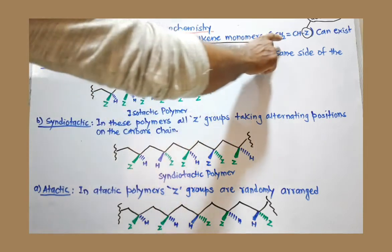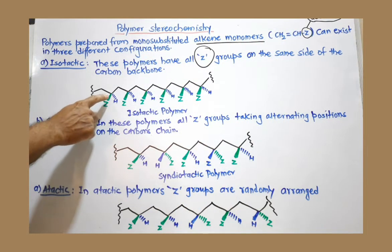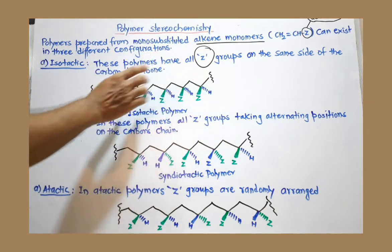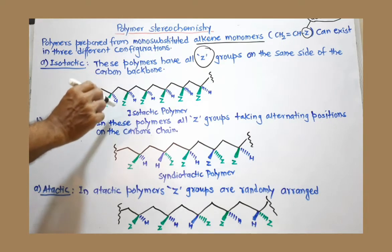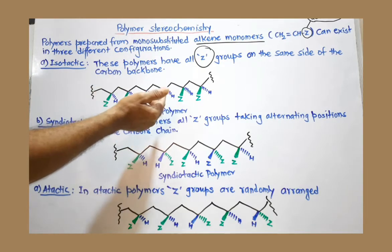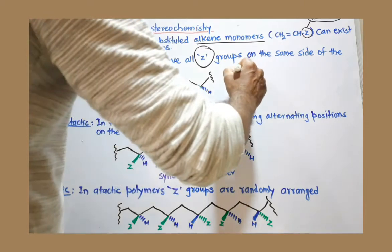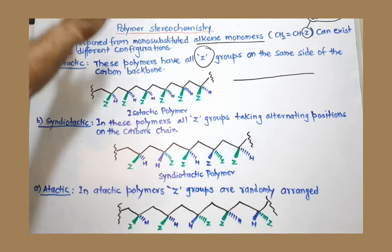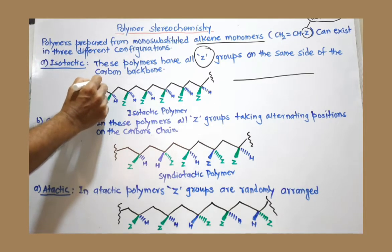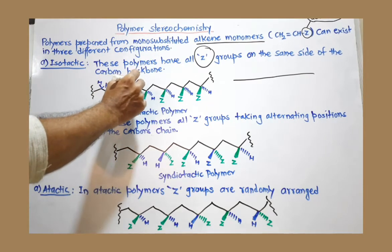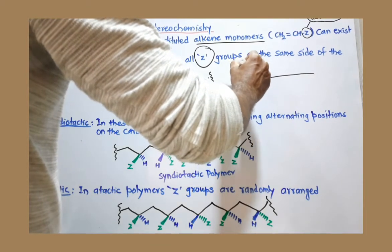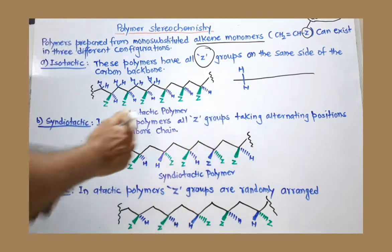This black line represents the carbon chain. Z is shown using a broad wedge, meaning it projects above the plane. If we consider this carbon chain lying on the plane of the board, Z is projecting above the plane, and H on the same carbon is present below the plane. At alternate carbons there are two hydrogens, and these two hydrogens are above and below the plane.